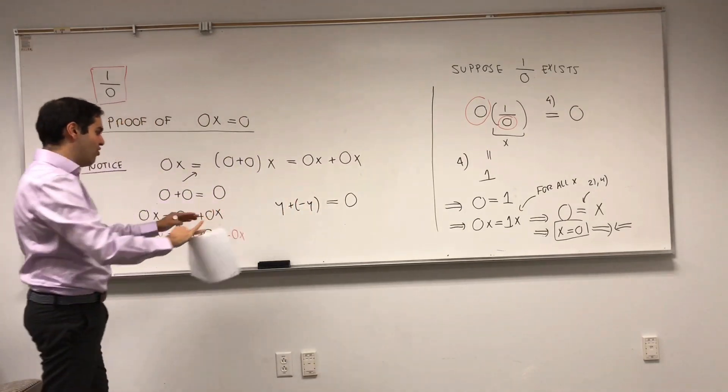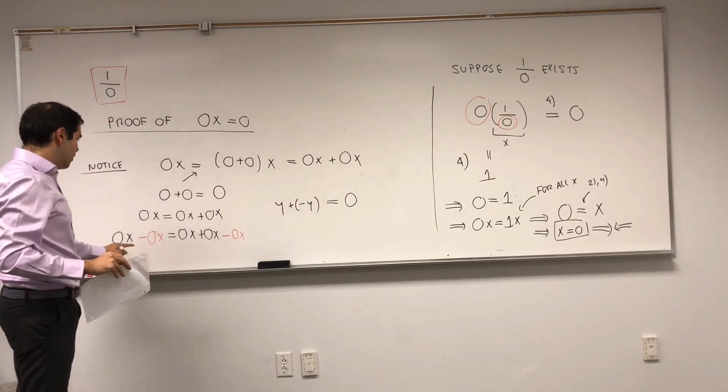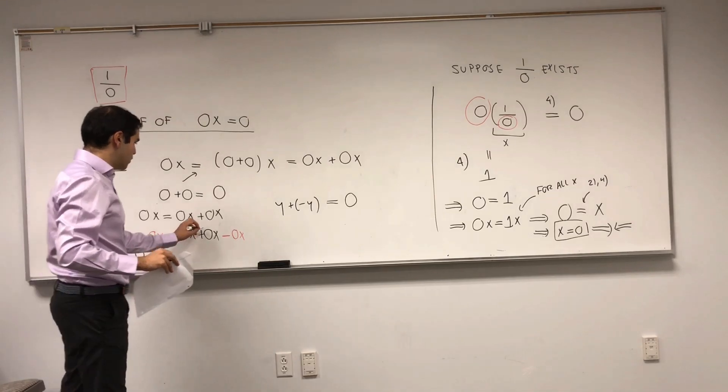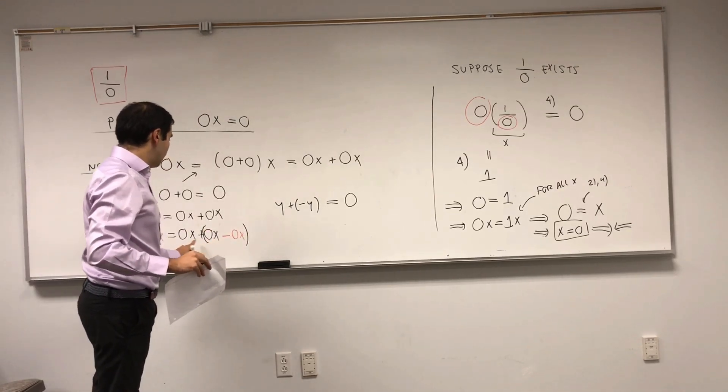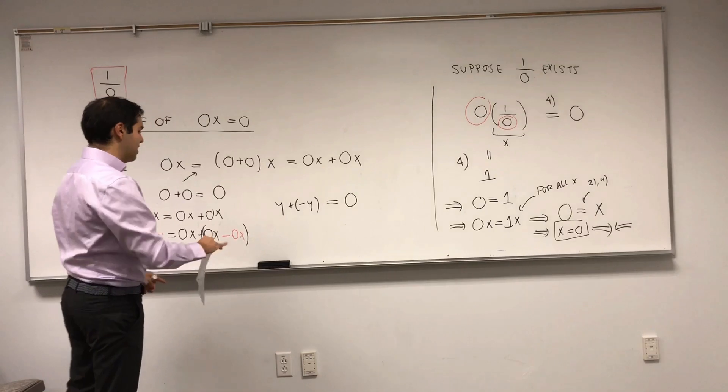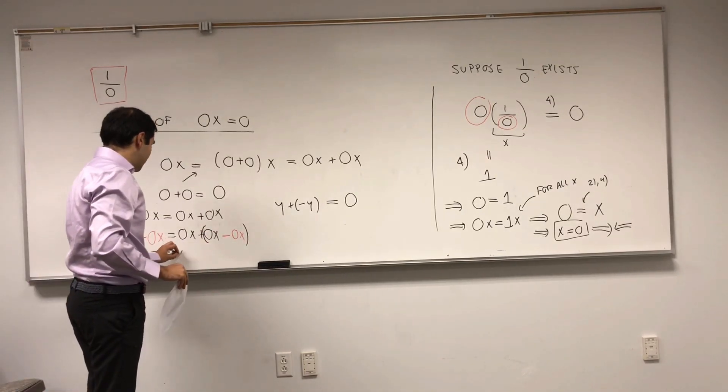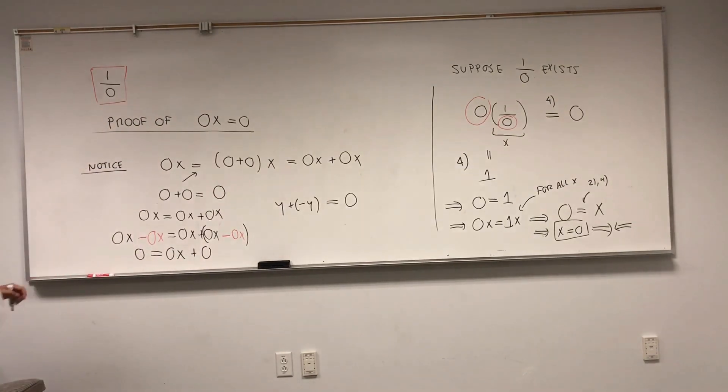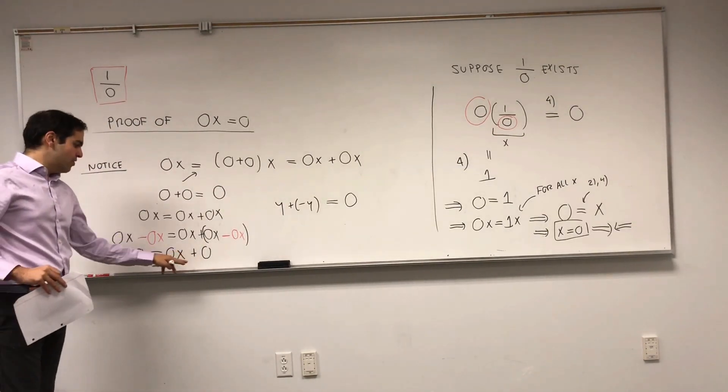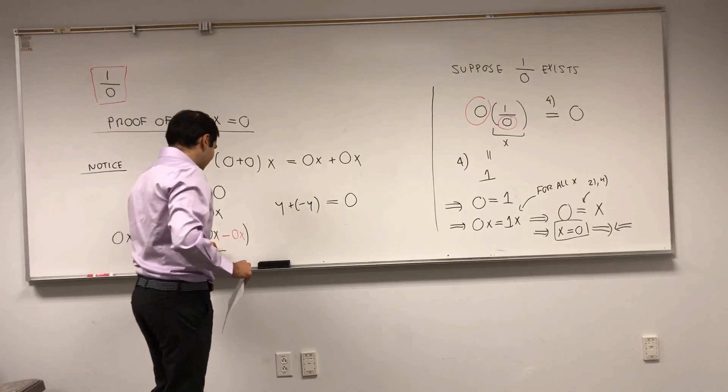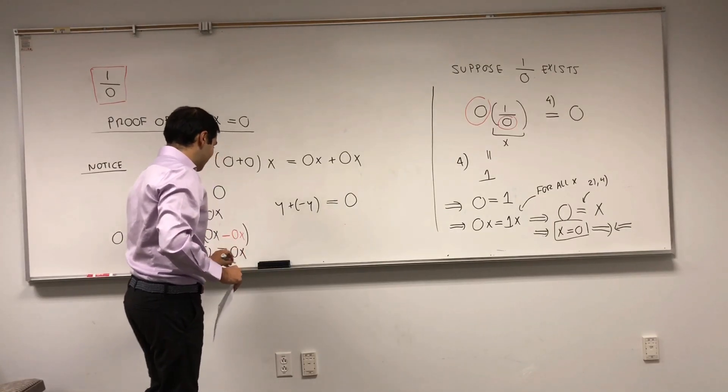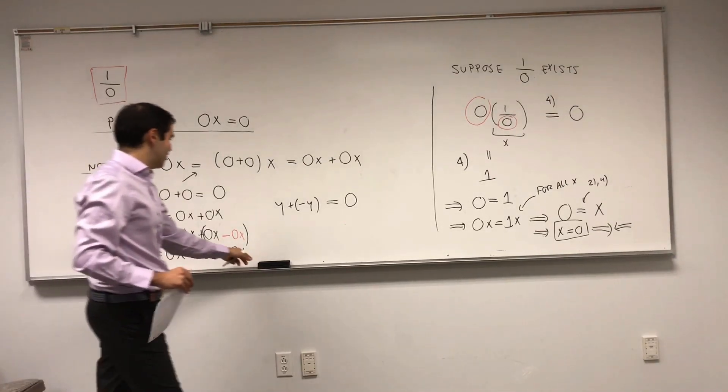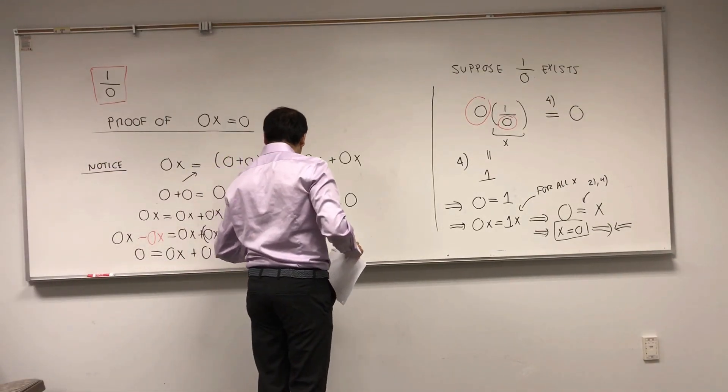0 equals 0x plus 0x minus 0x. That's what's called associativity. So, 0x plus 0. And, remember, adding 0 to anything gives you that thing. So, you get 0x. And, therefore, 0x equals 0, and that's what we wanted to show.